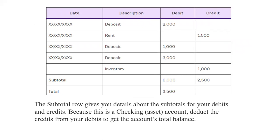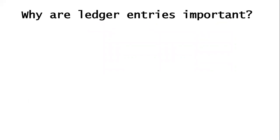Here is an example of what your general ledger account may look like after posting journal entries. The subtotal row gives you details — here, a total of $3,500 in credits. Because this is a tracking asset account, you subtract the credits from your debits to get the account's total balance.